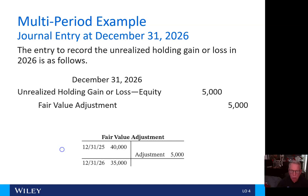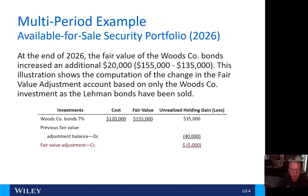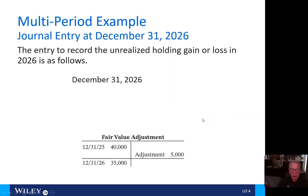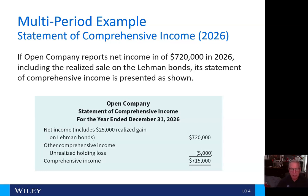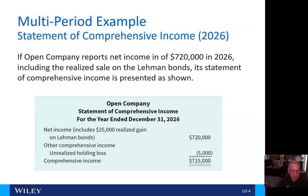If Open Company reports net income of $720,000 in 2026, including the realized sale of the Layman bonds, its statement of comprehensive income shows net income of $720,000 including that $25,000 realized gain, and other comprehensive income reflecting an unrealized holding loss of $5,000, so comprehensive income is $715,000.